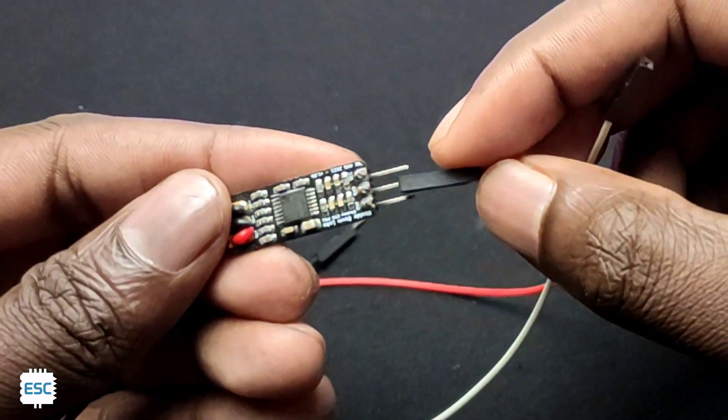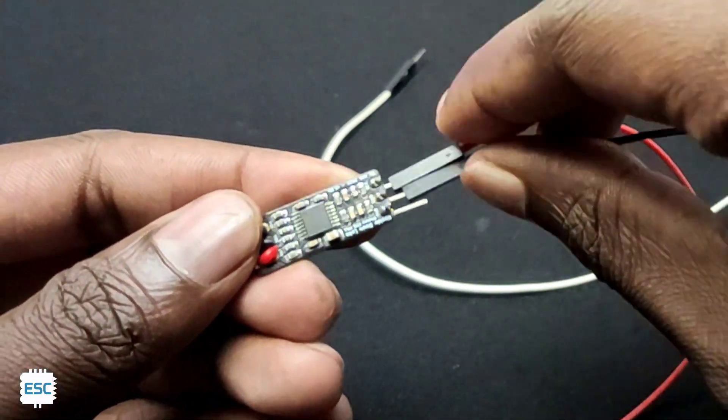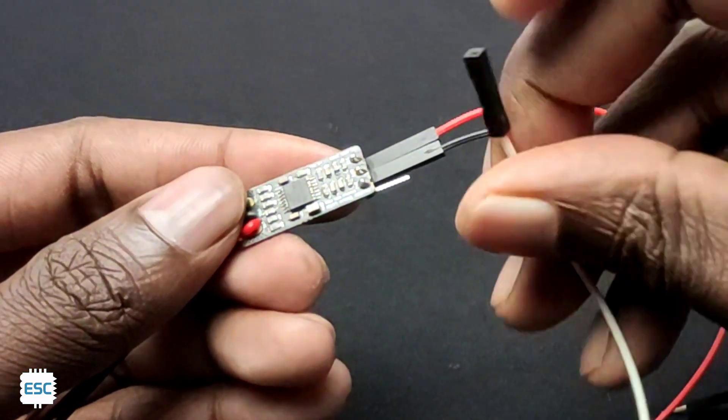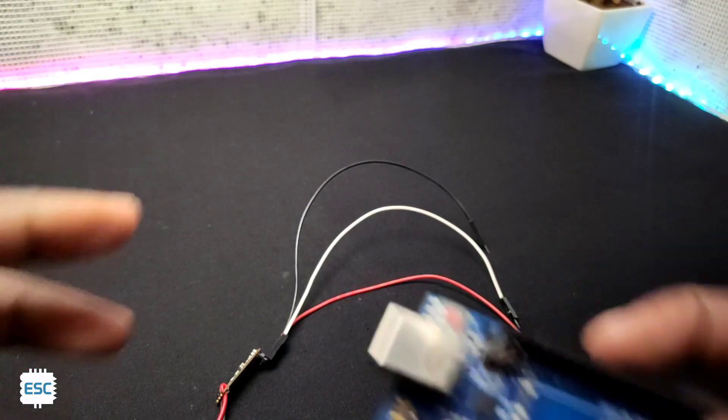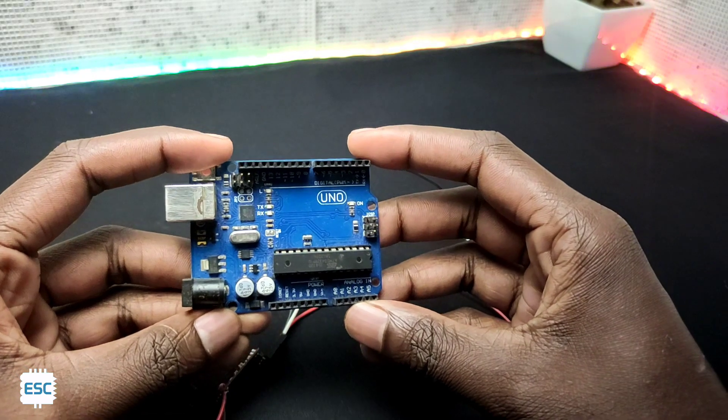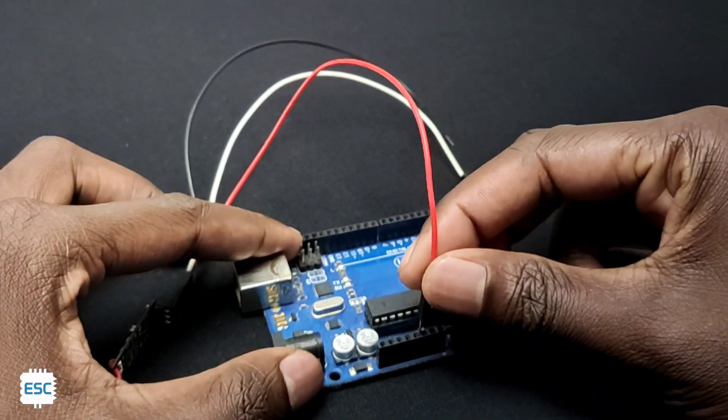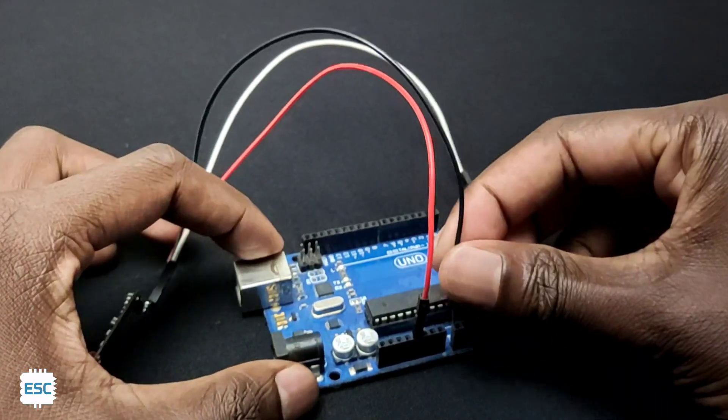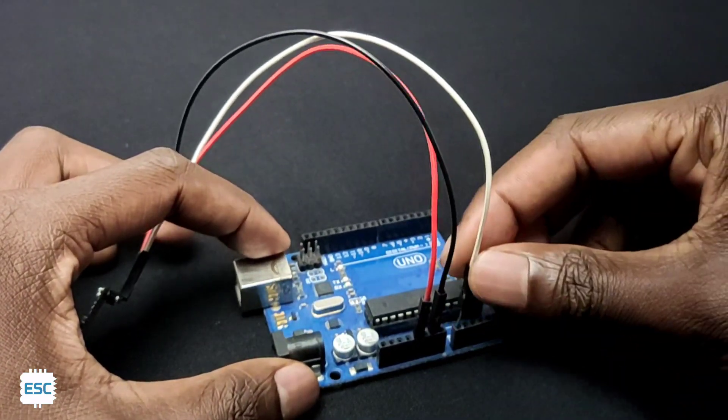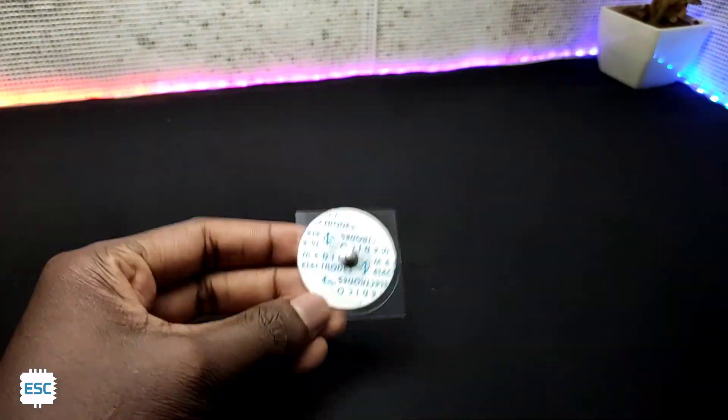Now I connected female-to-male header pins to the pill. Let's connect the pill to Arduino. Here I'm using Arduino Uno. I connected VCC of the pill to 5 volt of Arduino, ground to ground, and finally output to A0 pin of Arduino. That's it.